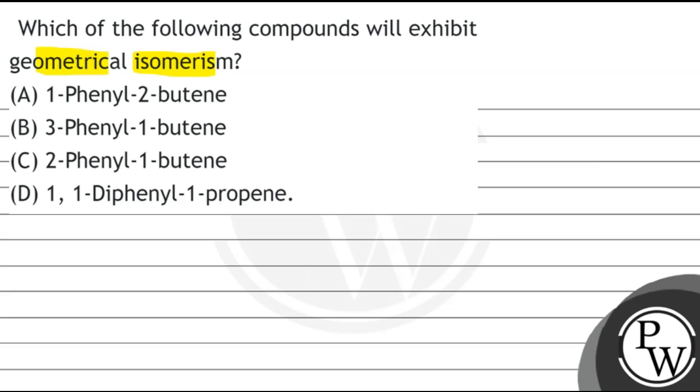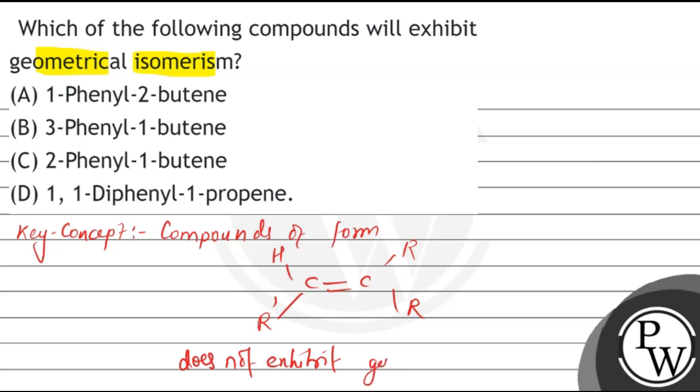Please know that the key concept of this question is compounds of form C double bond R, R, H and R prime does not exhibit geometrical isomerism, as on this carbon both the two groups are identical.